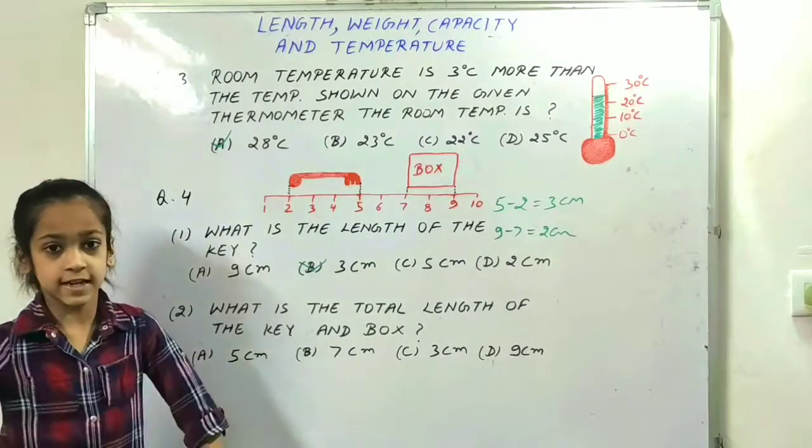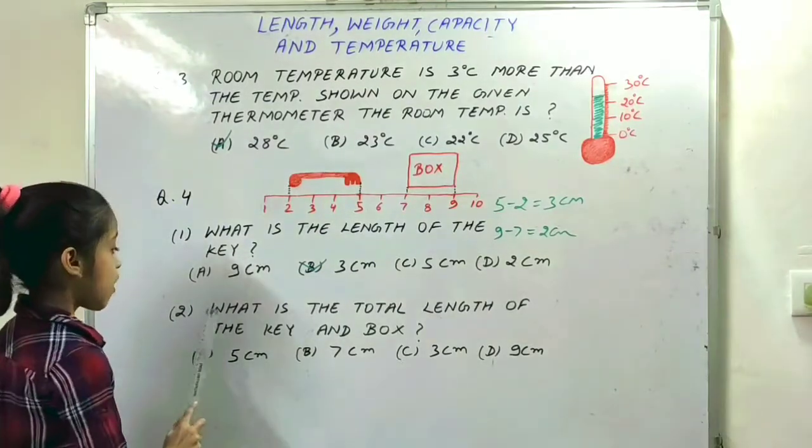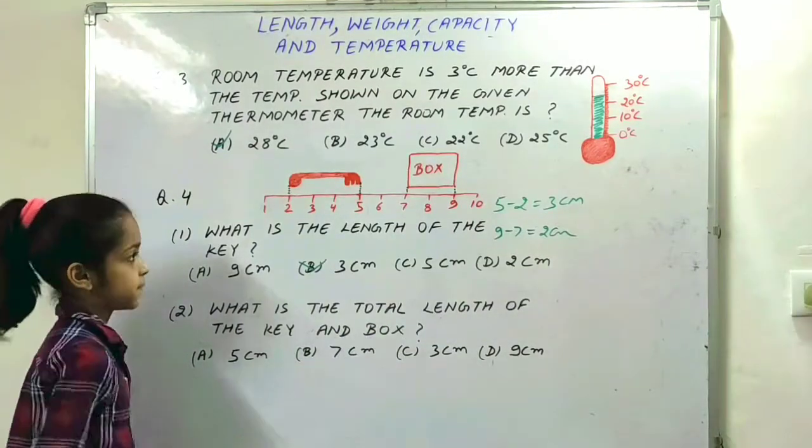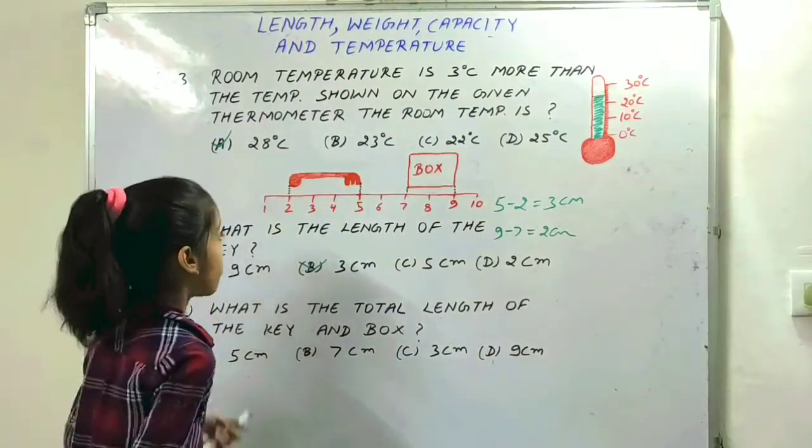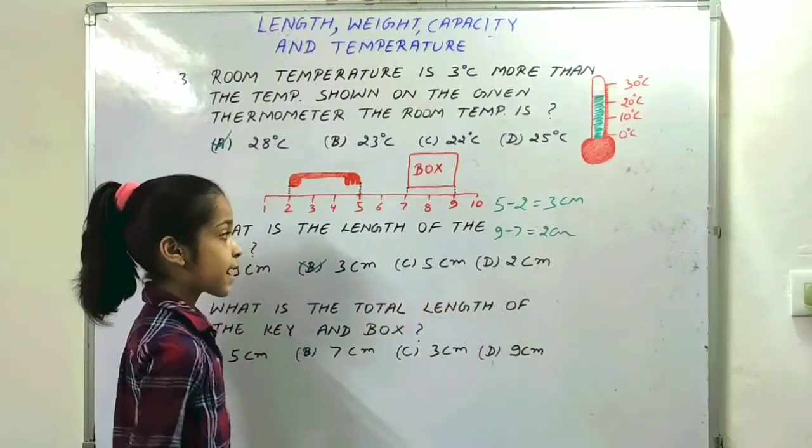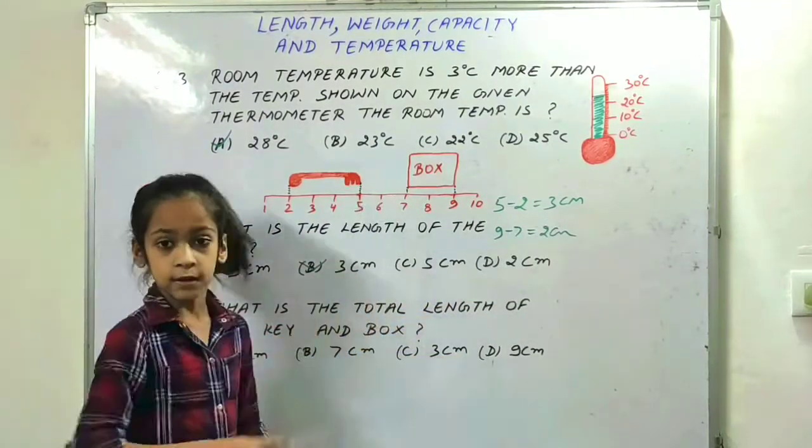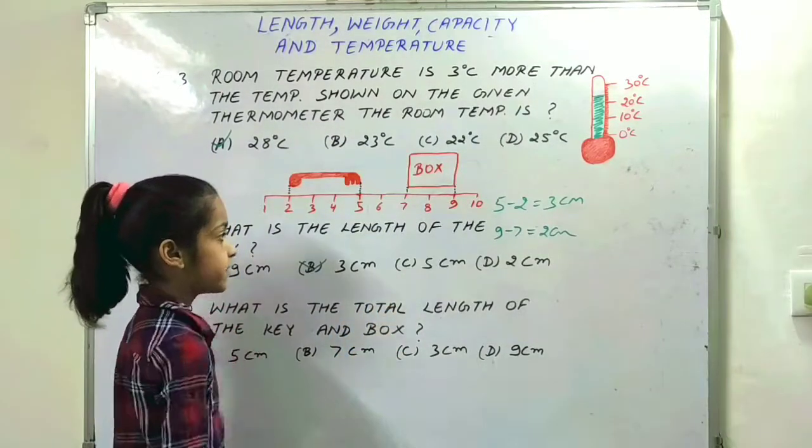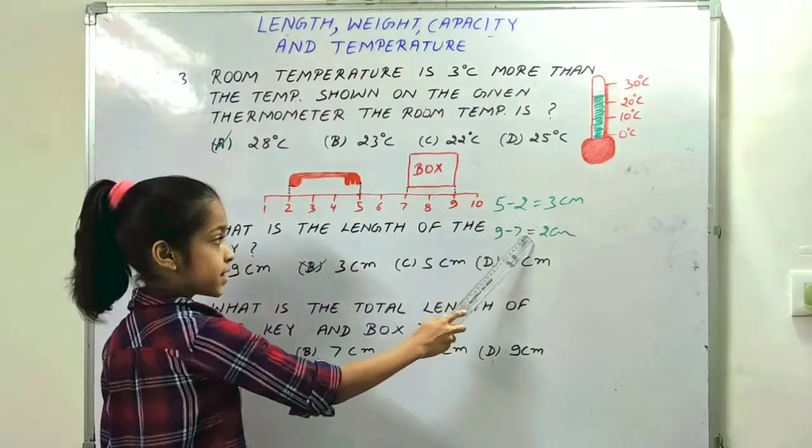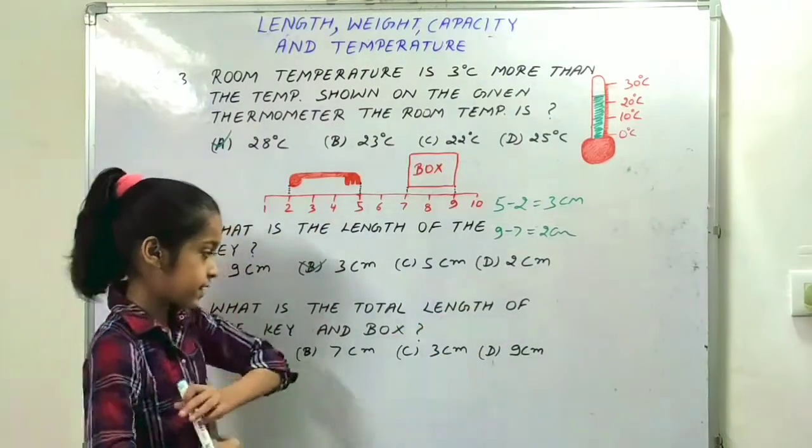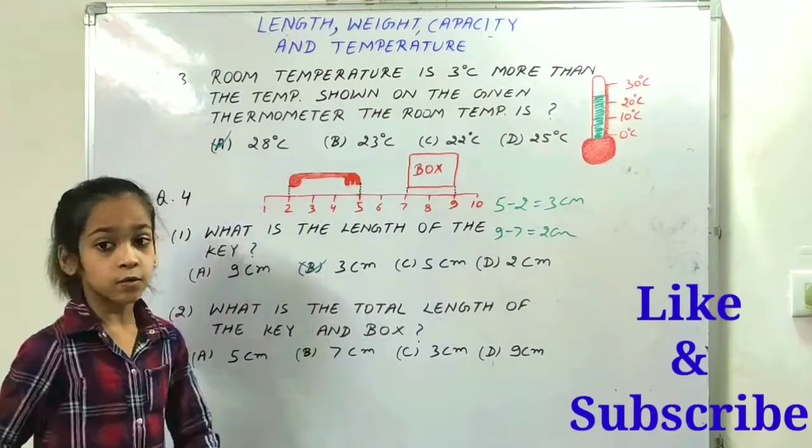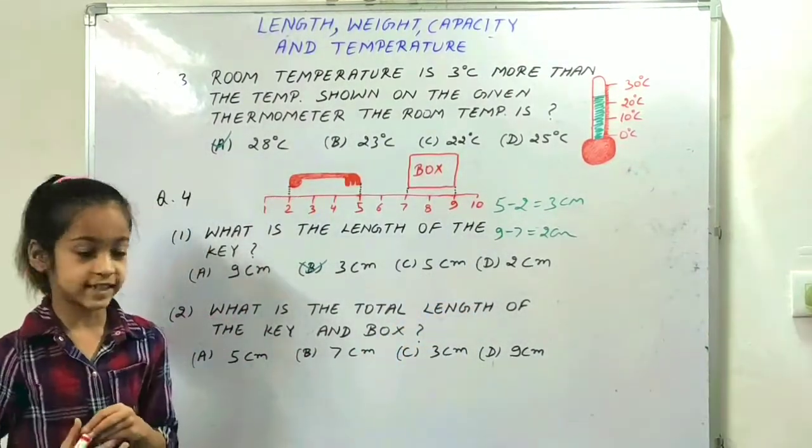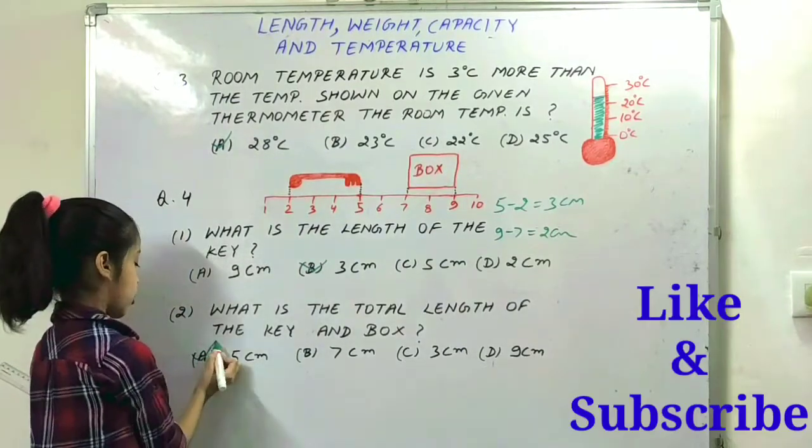Our next question is: what is the total length of the key and the box? The length of the key is 3 centimeters and here is the box. The box starts from 7 and ends on 9. So 9 minus 7 is equal to 2 centimeters. So 3 plus 2 is equal to 5 centimeters. Option A is the right option.